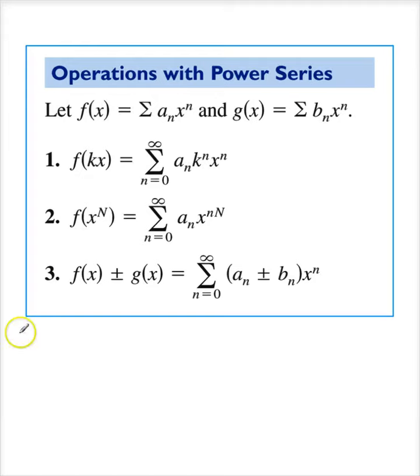Operations with power series are fairly straightforward. Suppose I have two power series, f of x and g of x, as defined. If I multiply k and x, then what happens to that power series? Well, everywhere I have an x here, I'm going to put a kx. And so you're going to get this k to the n, x to the n, times a sub n times x to the n.